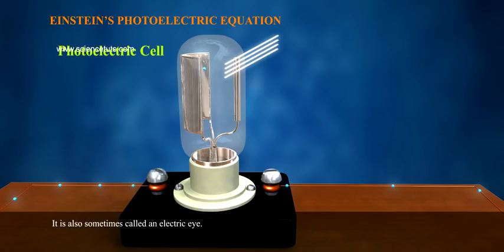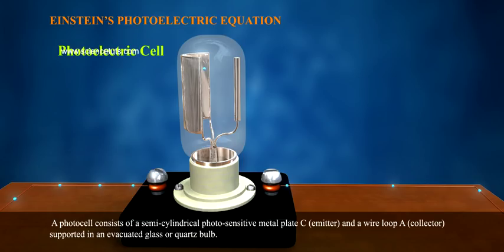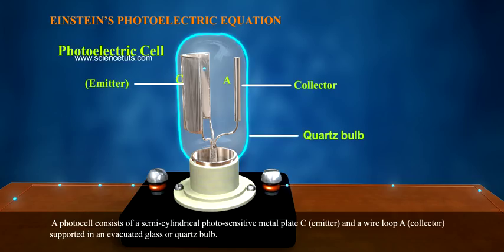It is also sometimes called an electric eye. A photocell consists of a semi-cylindrical photosensitive metal plate C (emitter) and a wire loop A (collector) supported in an evacuated glass or quartz bulb.